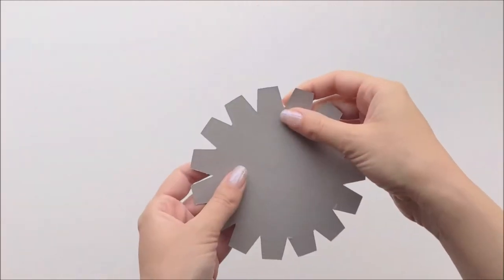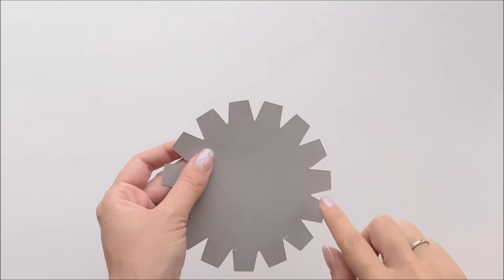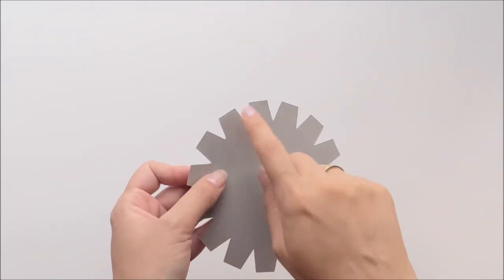Next, we're going to work on the top of the hat, which is this circle piece with tabs. What you want to do is fold down each of these tabs one by one.